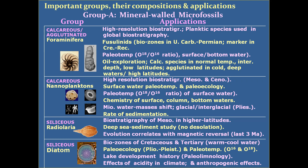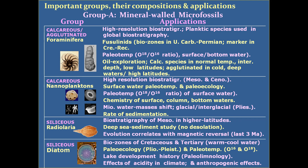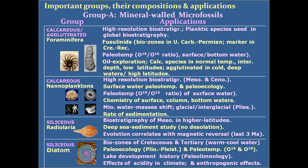Another group of calcareous nature is nannoplanktons, used in high-resolution biostratigraphy, particularly for Cenozoic rocks. Surface water paleotemperature and paleoecology can be worked out. Chemistry of surface column and bottom waters can be studied. Biocene water mass shifts and glacial-interglacial cycles during the Pleistocene period can be studied, and they are also helpful in calculating the rate of sedimentation. The siliceous radiolaria are useful in biostratigraphy for Mesozoic rocks at higher latitudes and in deep-sea sediment study, as they do not show dissolution effects like calcareous forms do at great depths. They also correlate well with magnetic reversals of the last 3 million years, making their utility go hand in hand with magnetostratigraphy.